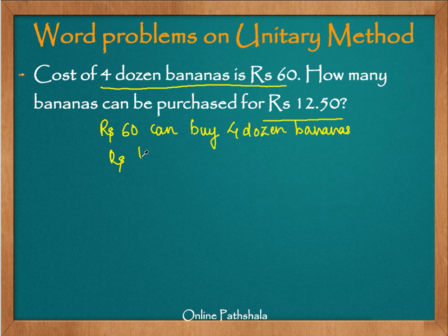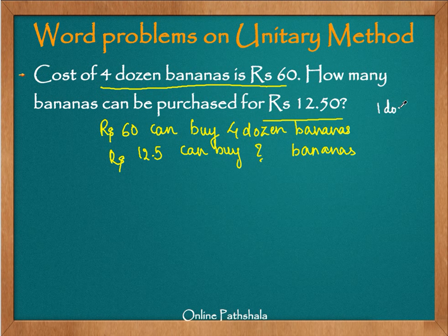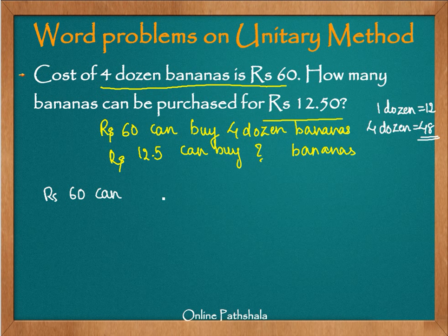We are supposed to find out how many bananas rupees 12.5 can buy, given that rupees 60 can buy 4 dozen bananas. Before we proceed, we note that 1 dozen means 12, so 4 dozen bananas is 12 multiplied by 4, which is 48 bananas. So we can say that rupees 60 can buy 48 bananas.